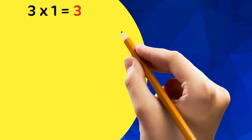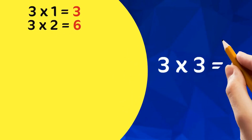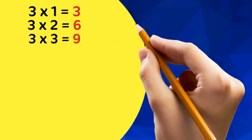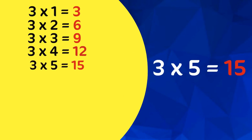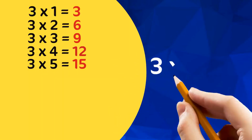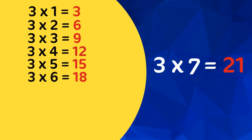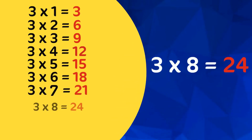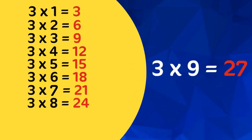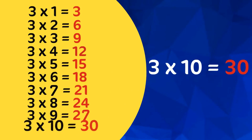3 1s are 3, 3 2s are 6, 3 3s are 9, 3 4s are 12, 3 5s are 15, 3 6s are 18, 3 7s are 21, 3 8s are 24, 3 9s are 27, 3 10s are 30.